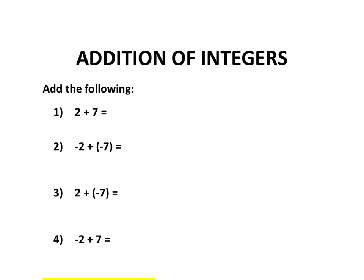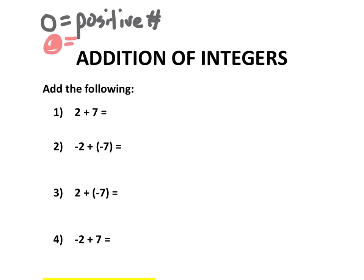Today we're going to look at addition of integers and modeling using double-sided counters. We're going to use a white circle for a positive number, and a red circle is going to equal a negative number.